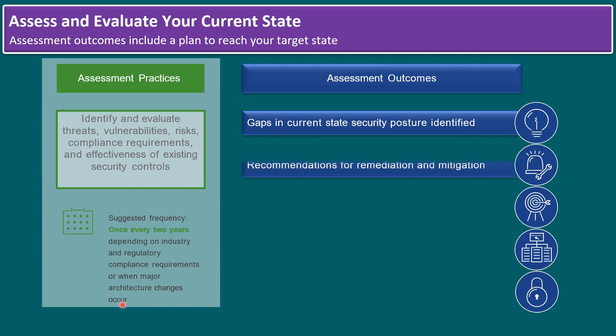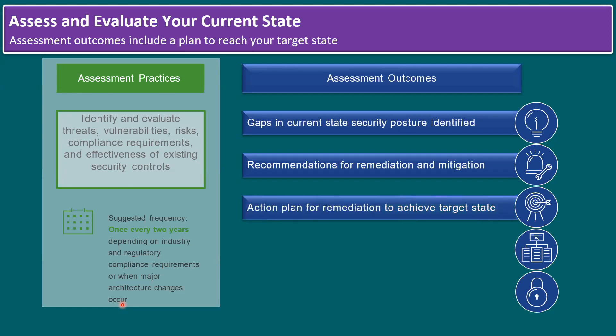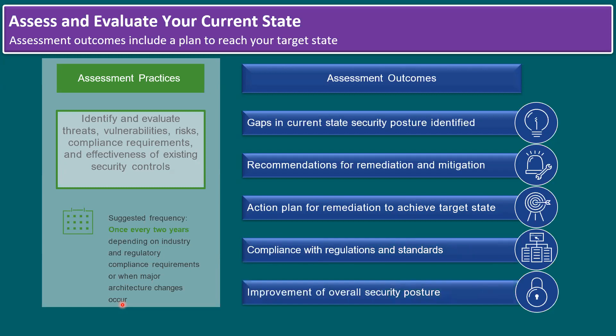Another assessment outcome is recommendations for remediation and mitigation. For example, if our ESXi host is running with an N-1 security patch, the recommendation will be to update to the latest patch — such as ESXi 7 Update 3, or ESXi 8.0 Update 1 or Update 2. This remediation covers not only the ESXi layer but also the operating system level. Additional outcomes include an action plan to achieve the target state, compliance with regulations and standards, and overall improvement of the security posture.